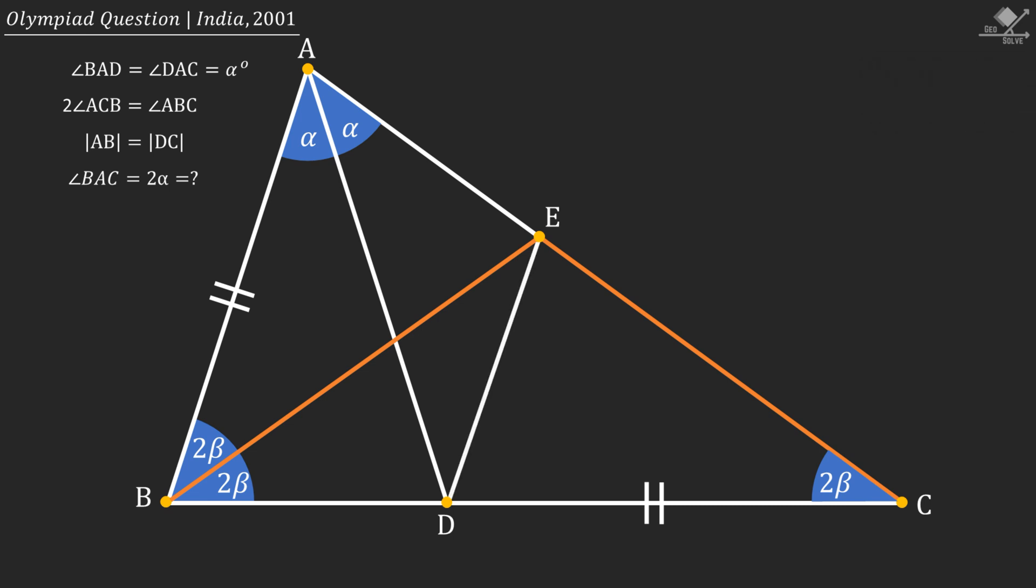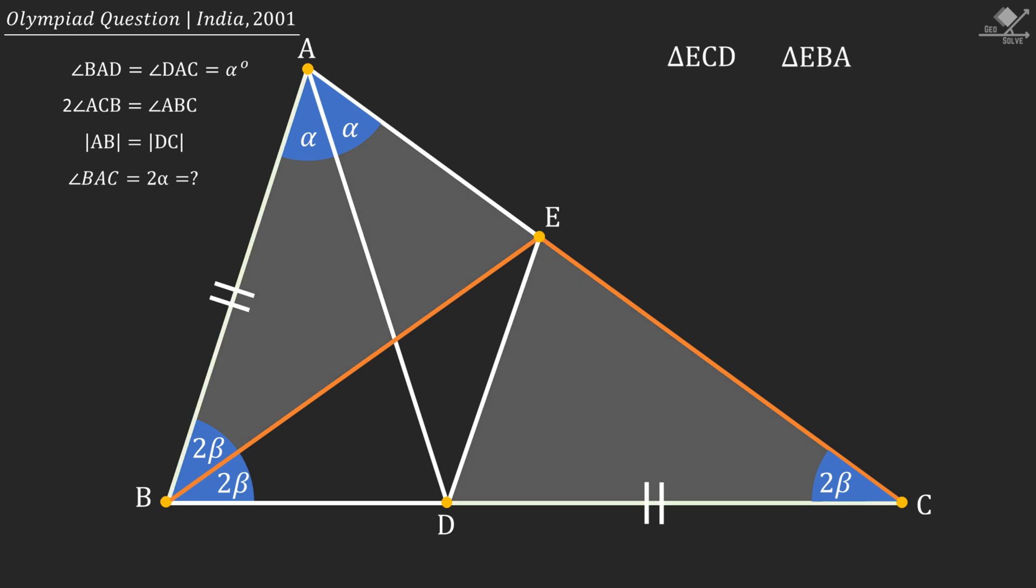Now, let's connect points D and E, and focus on these two shaded triangles. Remember that line segments AB and DC were equal.